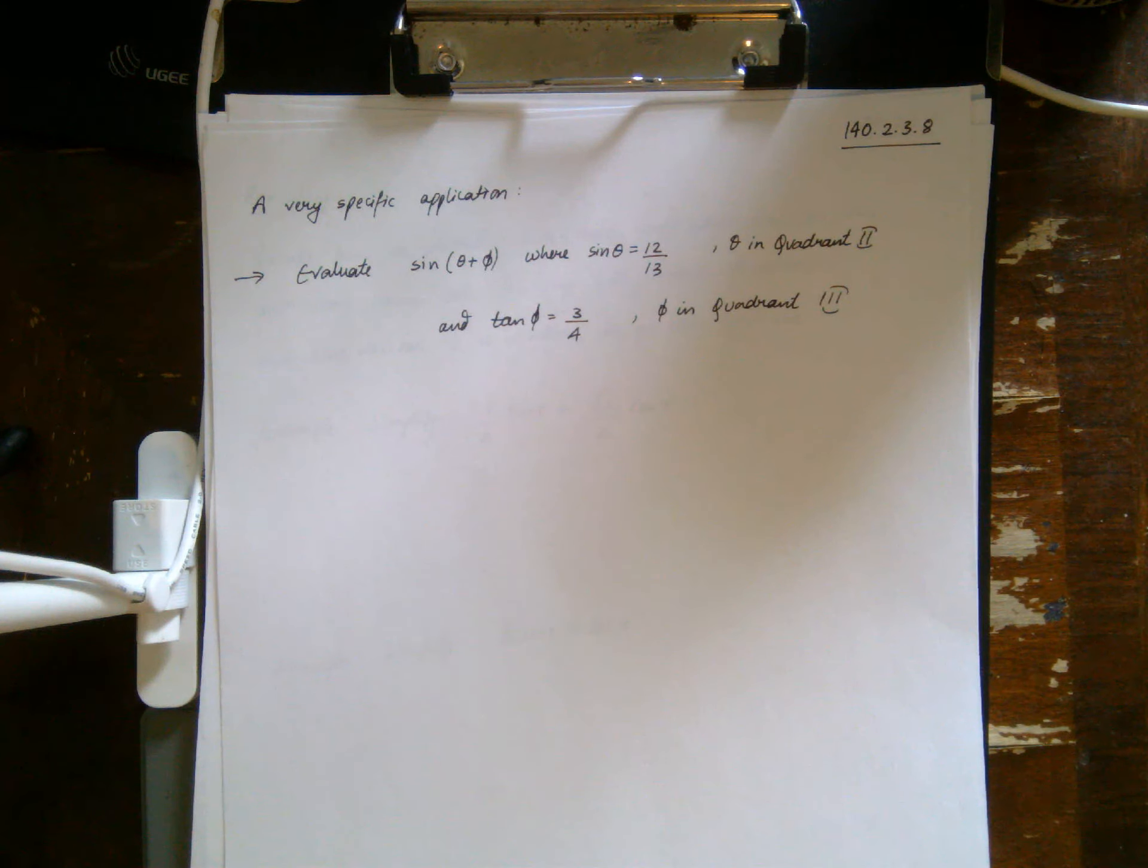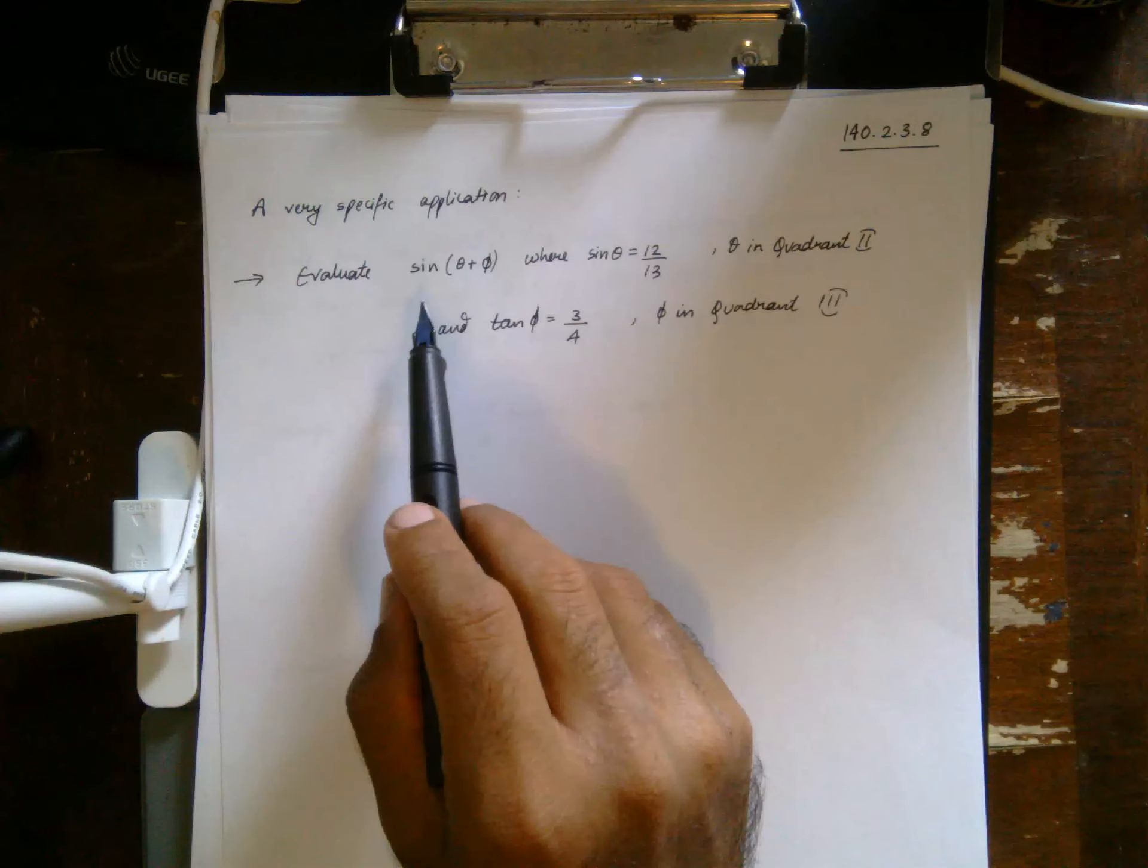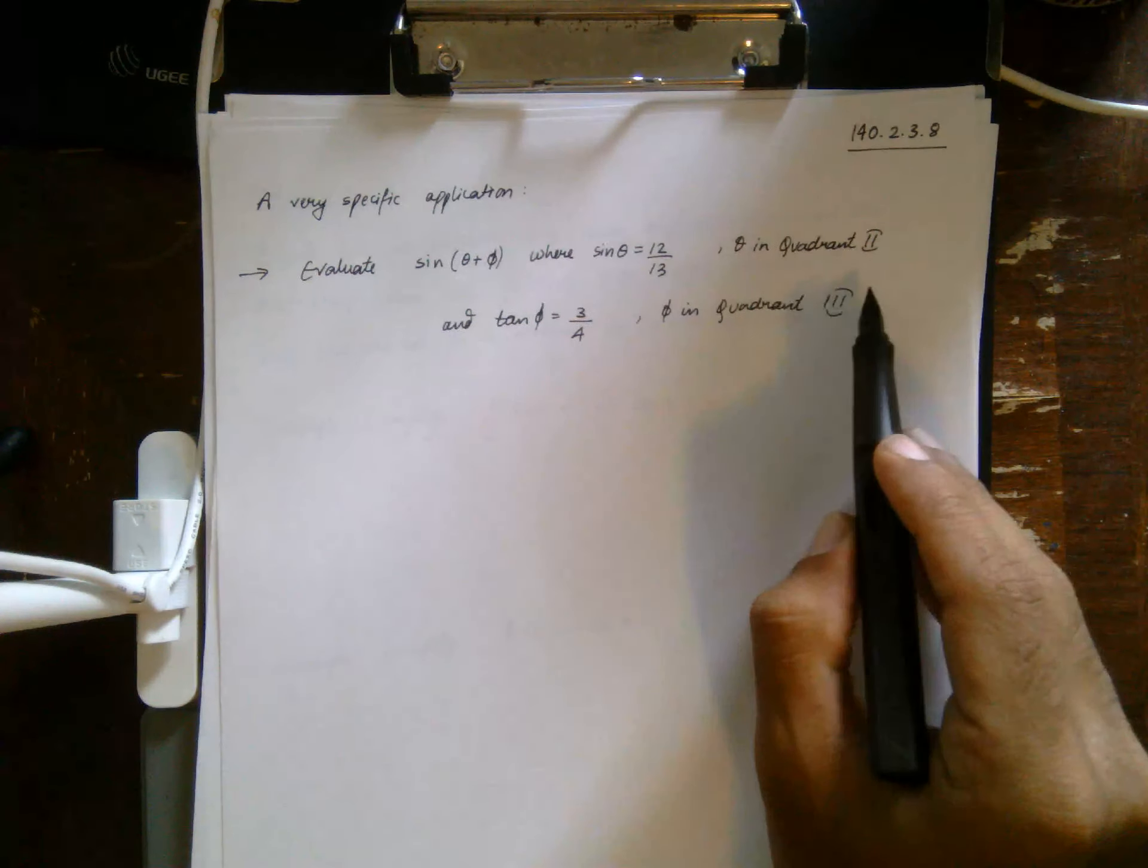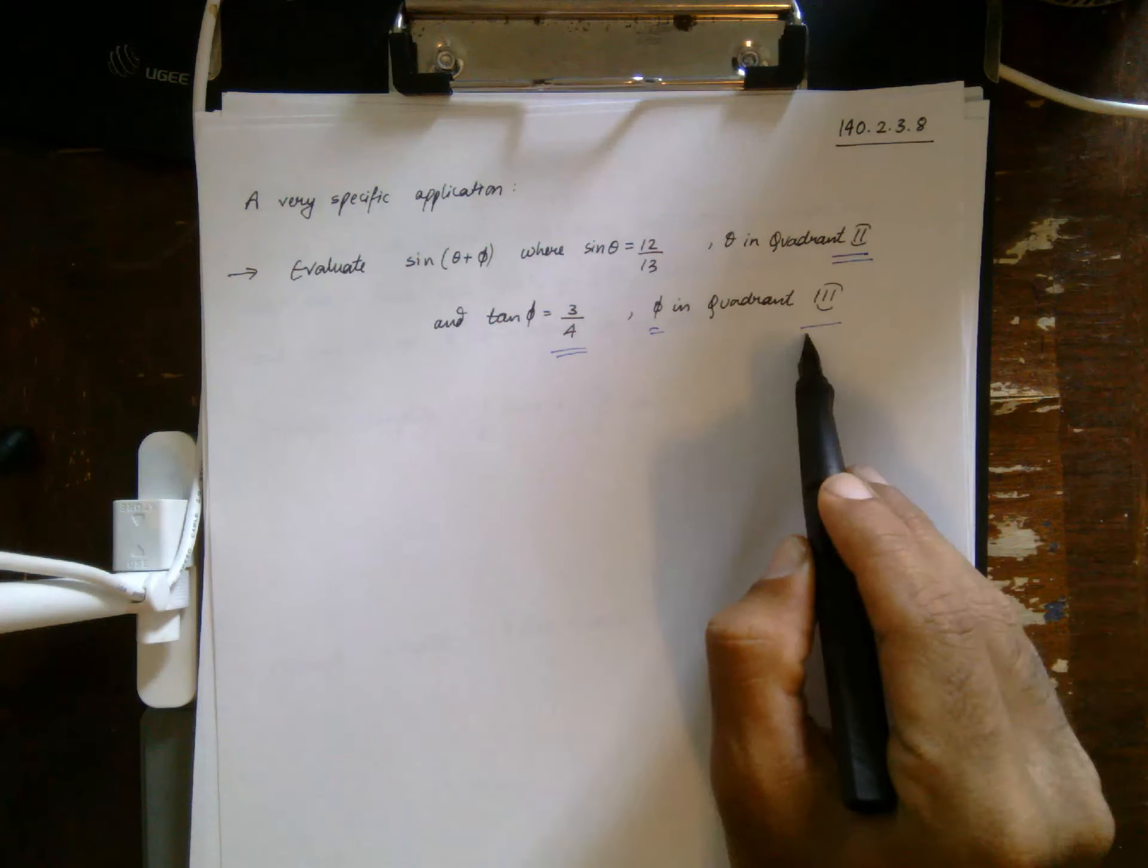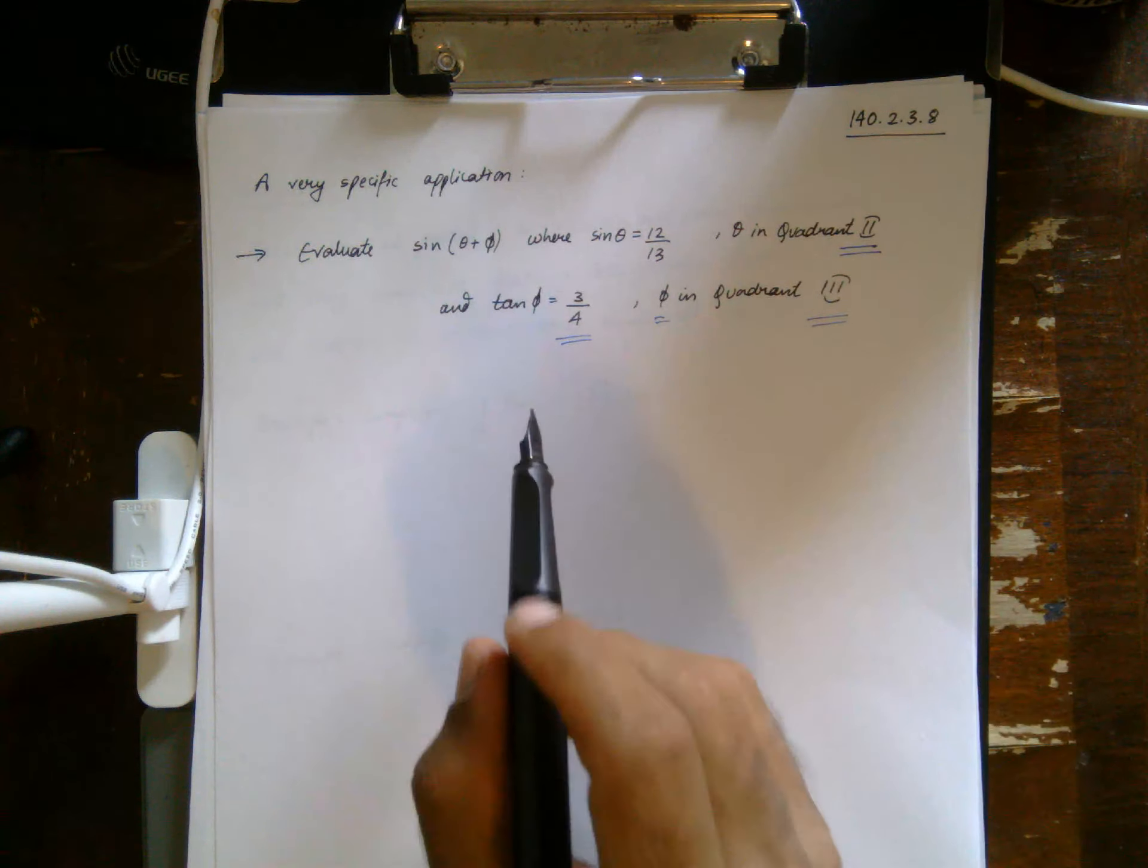So our goal is going to be to try and identify or pinpoint as to why it so happened to be. Okay, now before that let's look at this example here: evaluate sine theta plus phi, where sine theta is 12 over 13 in quadrant 2, and tan phi is 3 over 4 in quadrant 3.